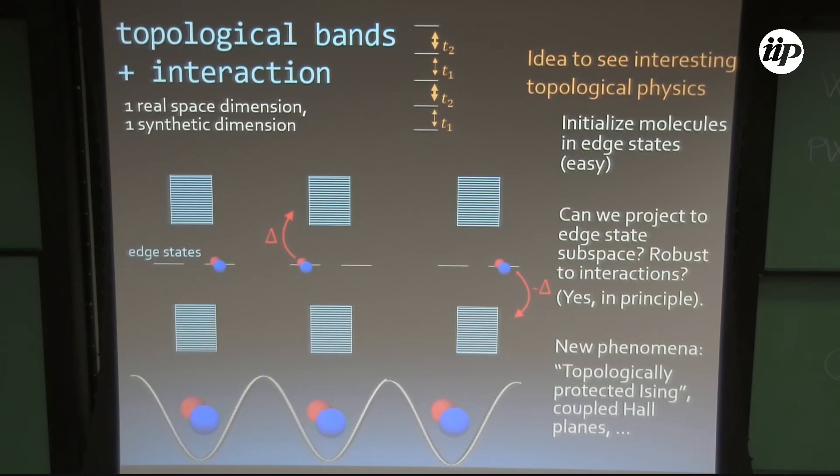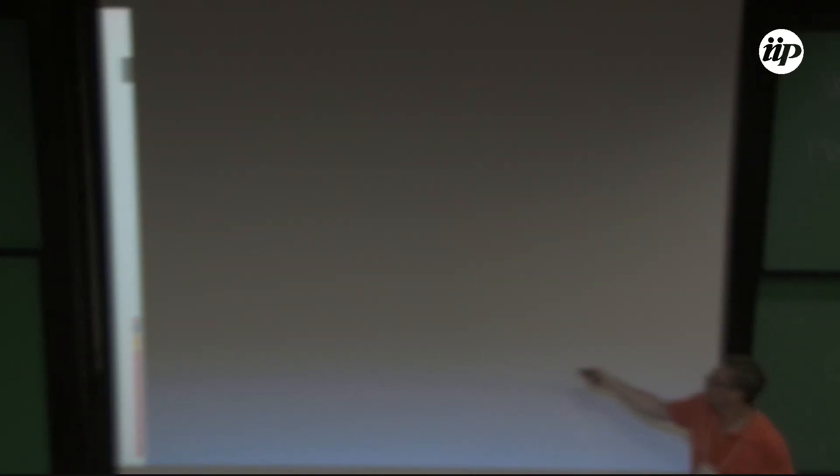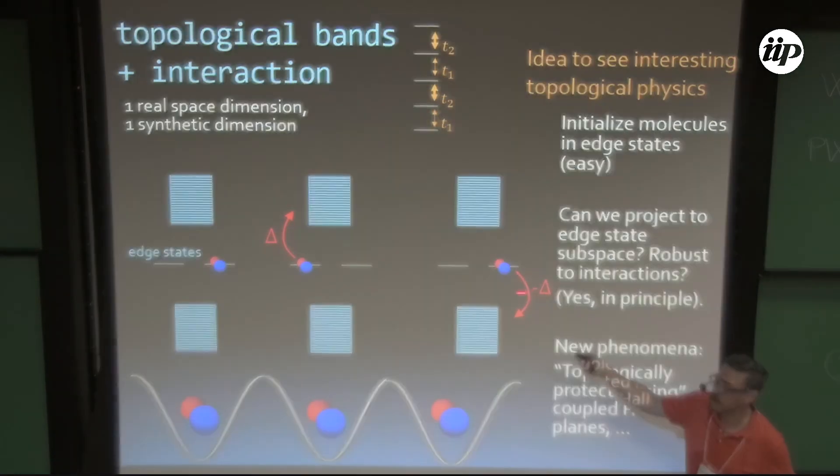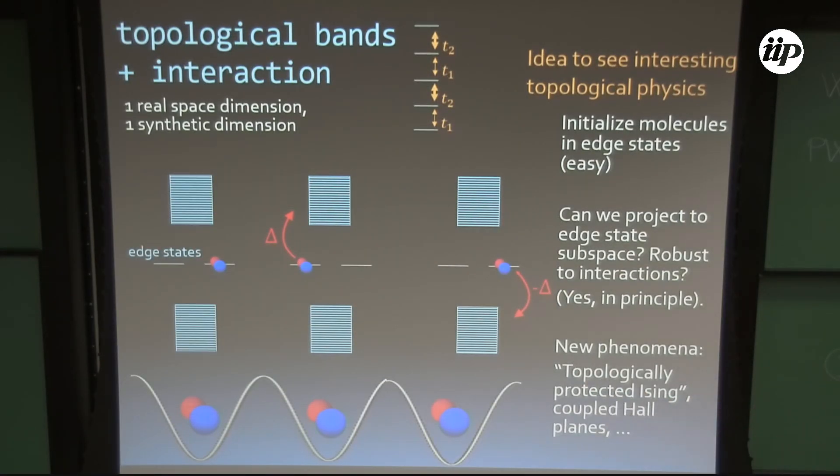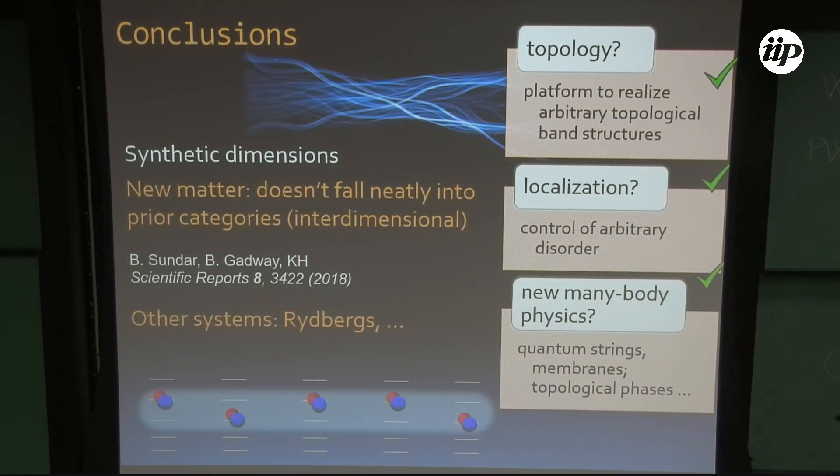And our basic questions have been what happens when you turn on interactions between this. Instead, if you want to see this interesting physics, you somehow have to populate the edge states by hand and then maybe look at what happens to the dynamics in that model. And you get things, what I call a topologically protected Ising model. So these are my conclusions and I'll wrap up here. Thanks.